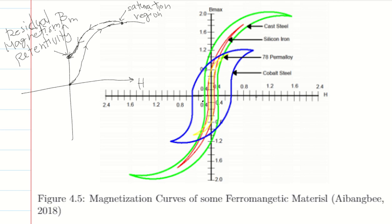When you reverse the current, it becomes negative. B decreases while H also decreases in the negative direction, until B reaches zero. At that point, H is not equal to zero — there is still a value for H. That value of H when B equals zero is called the coercive force, and the property is called coercivity.